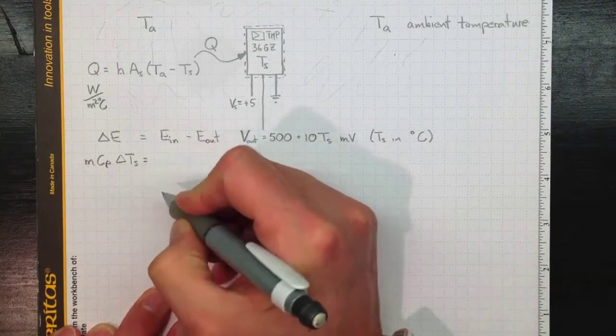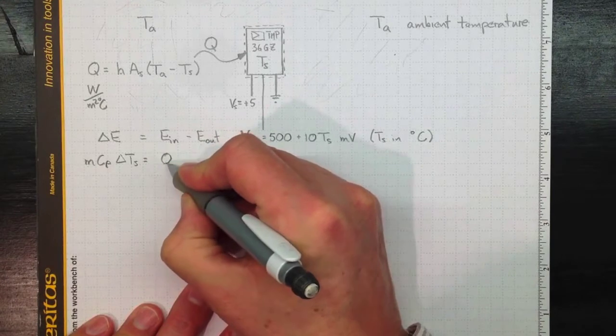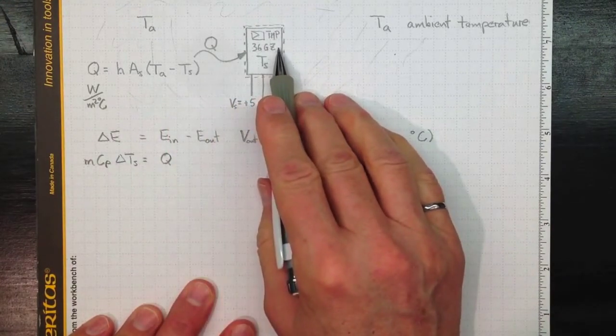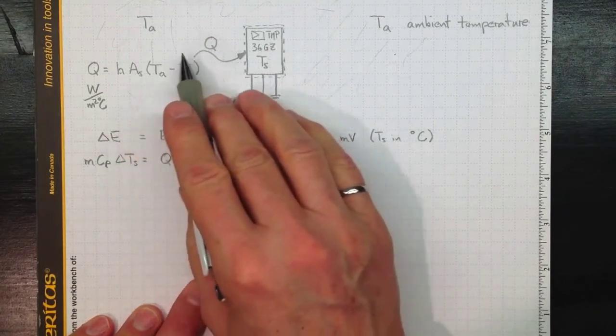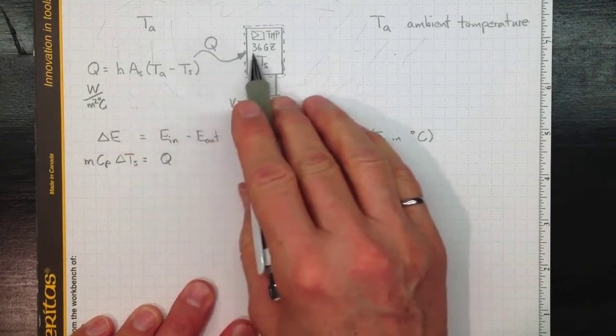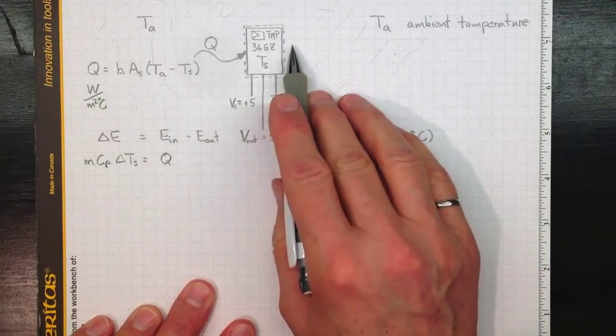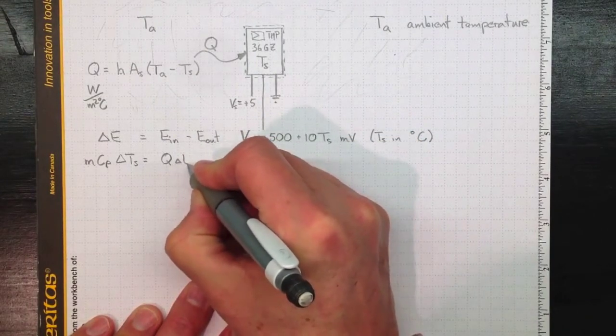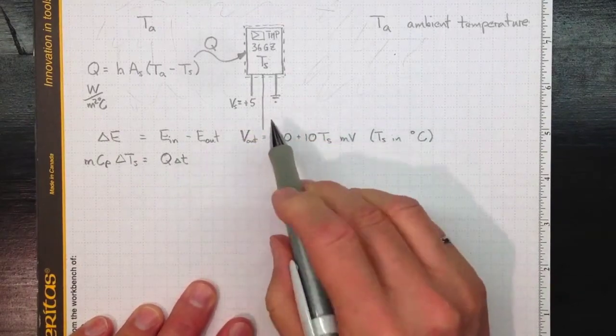The energy in, well that'll be Q, the energy in in watts or joules per second, times delta T, how long a time we're watching the control mass for. So it'll be Q times delta T.